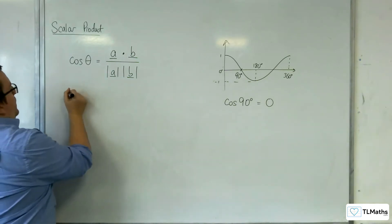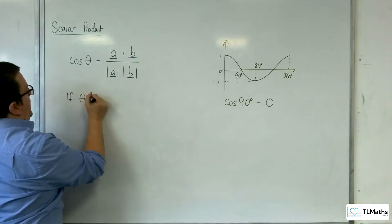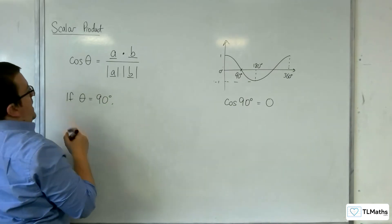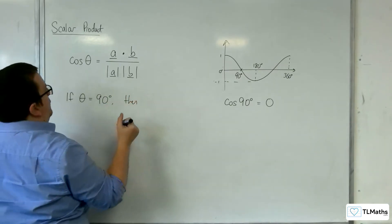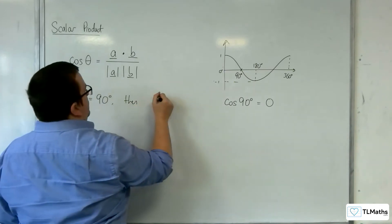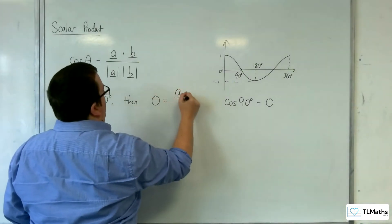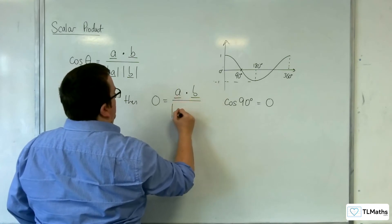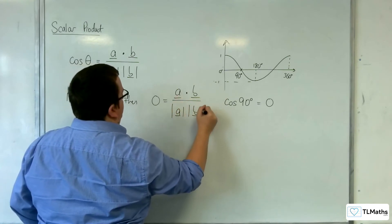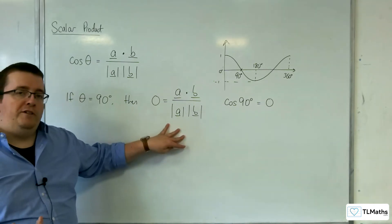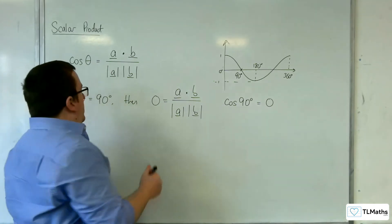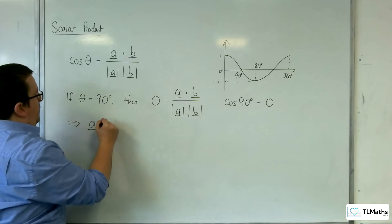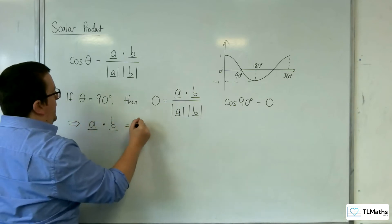So if theta equals 90 degrees, then what we have is that 0 is equal to a dot b over mod a mod b. But of course you can multiply both sides by the mod a mod b. So in order for the fraction to be equal to 0, that means that a dot b has got to be equal to 0.